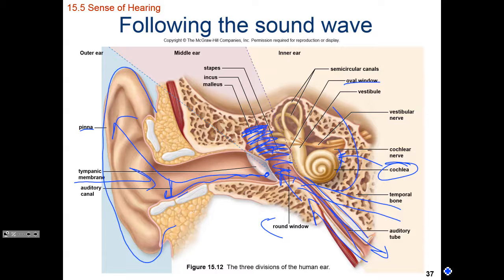When there's an ear infection and pressure in the middle ear cannot be relieved, that constant increase in pressure makes it difficult for the eardrum to vibrate. If the eardrum has difficulty vibrating, the person with the ear infection has a reduced ability to hear.